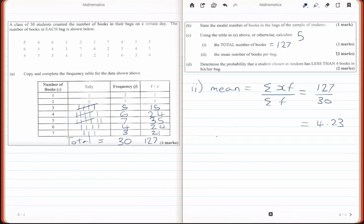So moving on to part D, the last question. Determine the probability that a student chosen at random has less than four books in his or her bag. So D is a probability question. To answer that, you have to look at your table and assess the frequency.